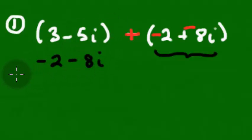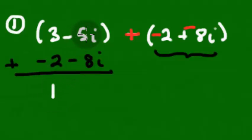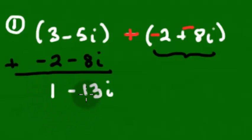Once we've lined them up accordingly, remember we're actually dealing with an addition problem. When we add these two together, we get our final answer. 3 and negative 2 makes a positive 1. Negative 5 and negative 8 makes a negative 13. And my answer is also in A plus Bi form — our A part is 1, and our B is negative 13.